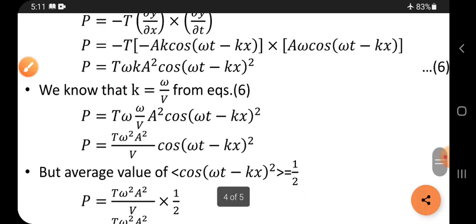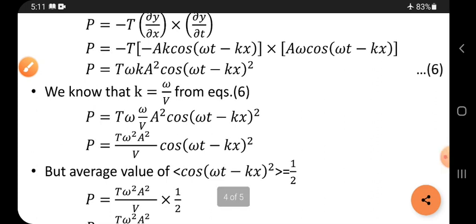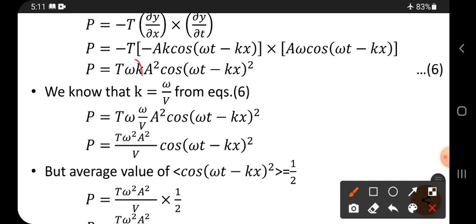But we know that k equals ω/v. In the place of k, we can replace k by ω/v. Omega into omega is ω². So T ω²A²/v cos².